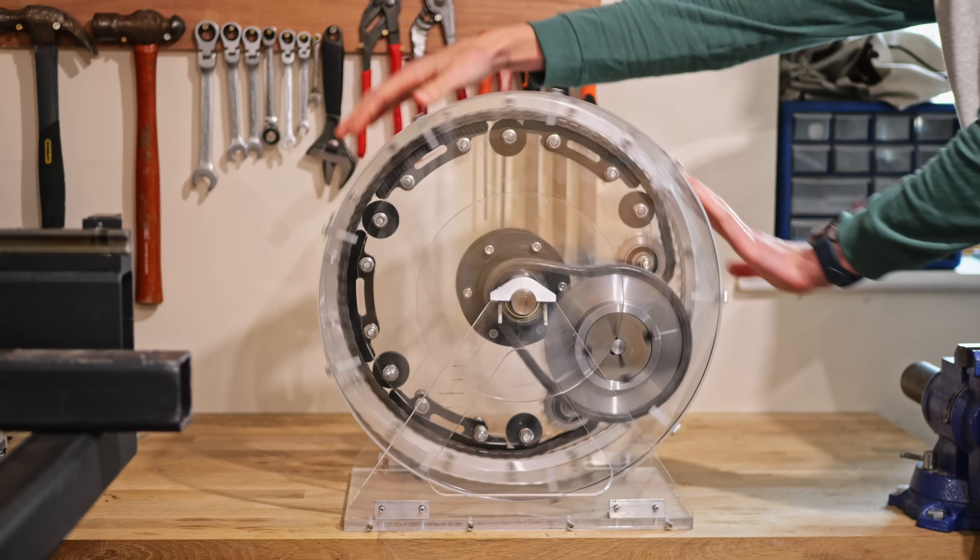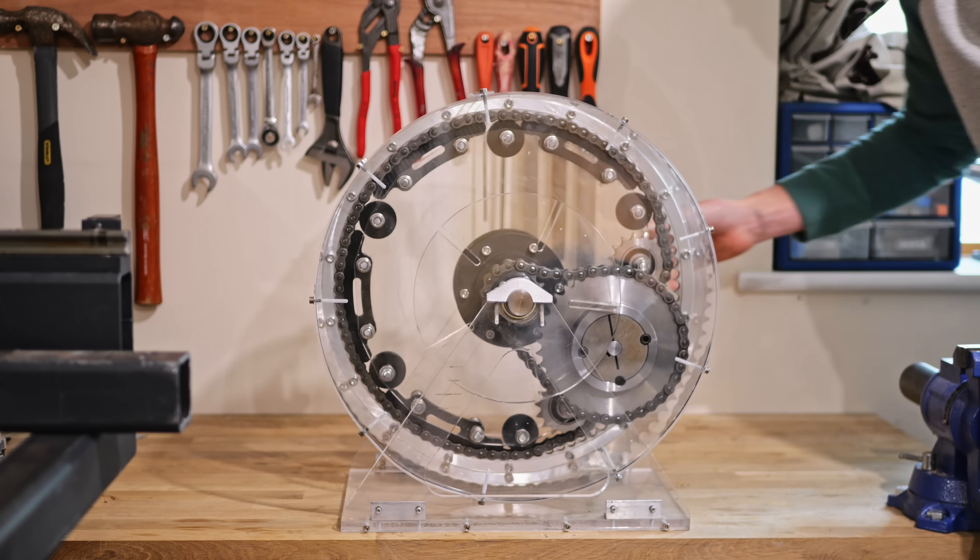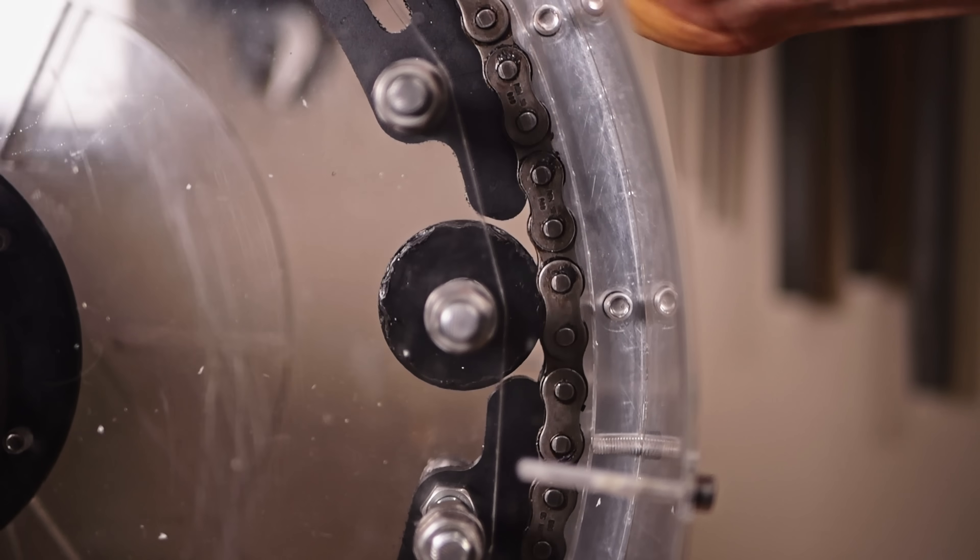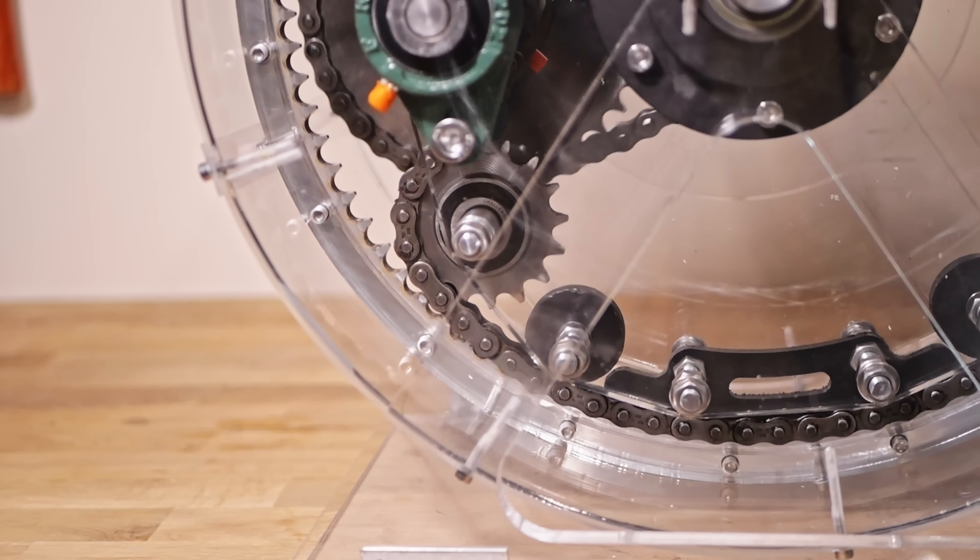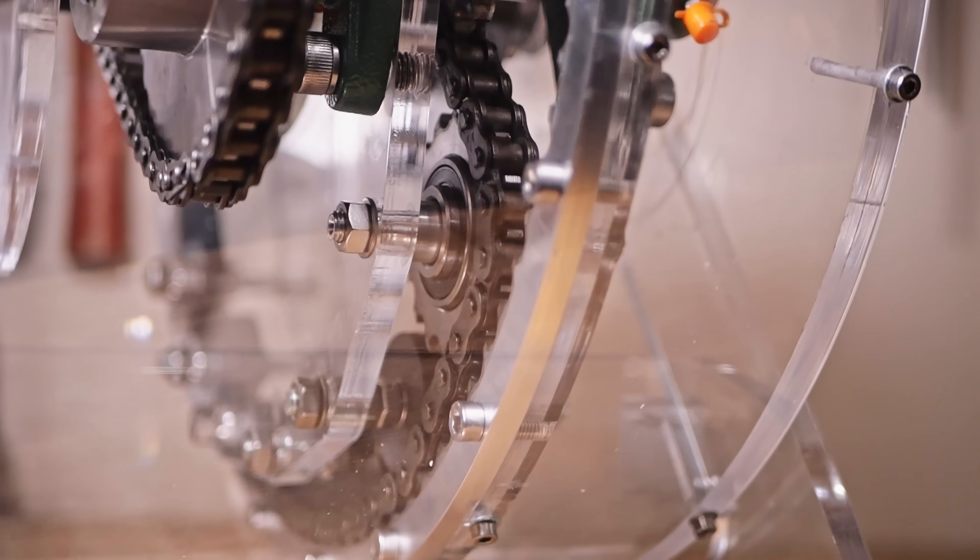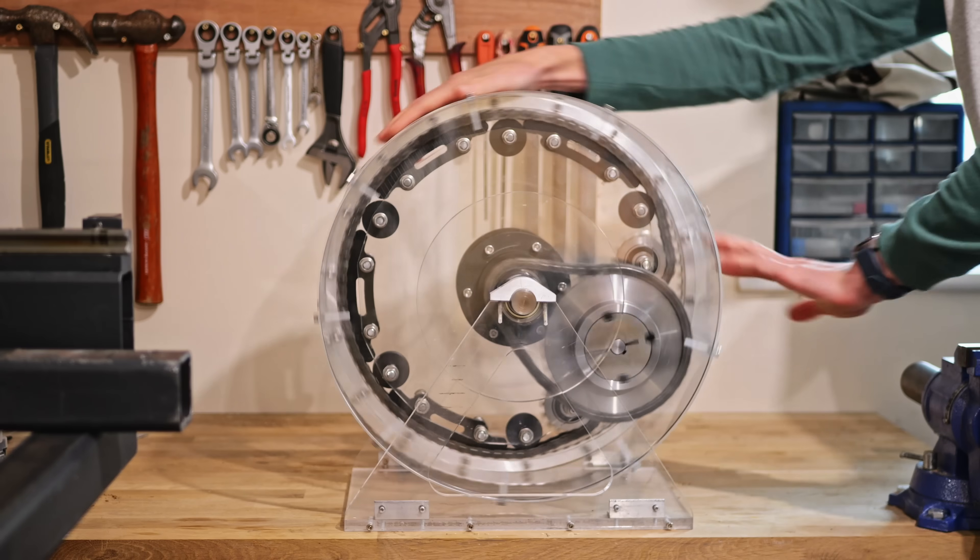Despite some benefits the design also definitely comes with some pretty obvious downsides. The first one is efficiency. The chain needs to be pushed outwards against the inverse sprocket so that it engages with it and I've done this by using some rollers and some static pads to push it outwards against that outer diameter. This obviously leads to an increase in friction and reduced efficiency when compared to normal chain drives or planetary gearbox.